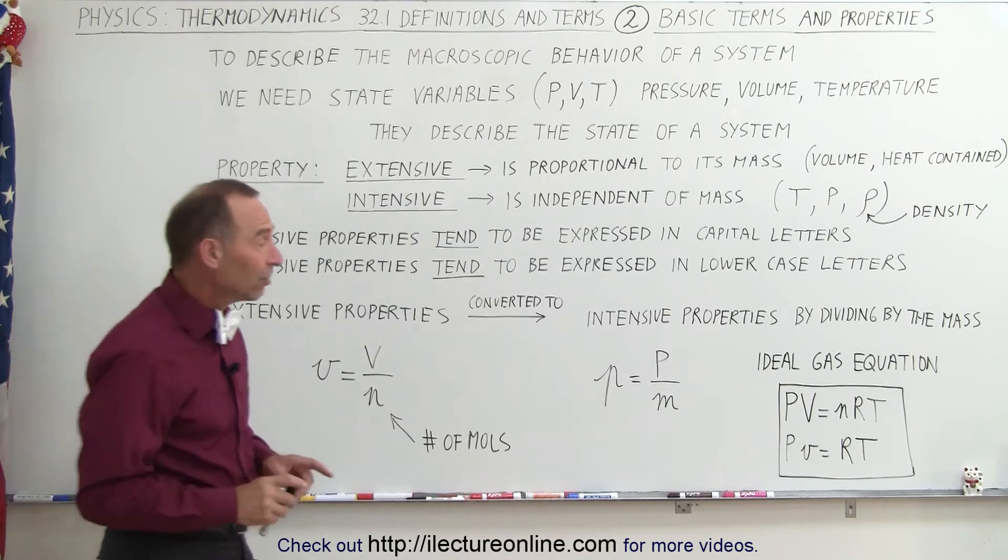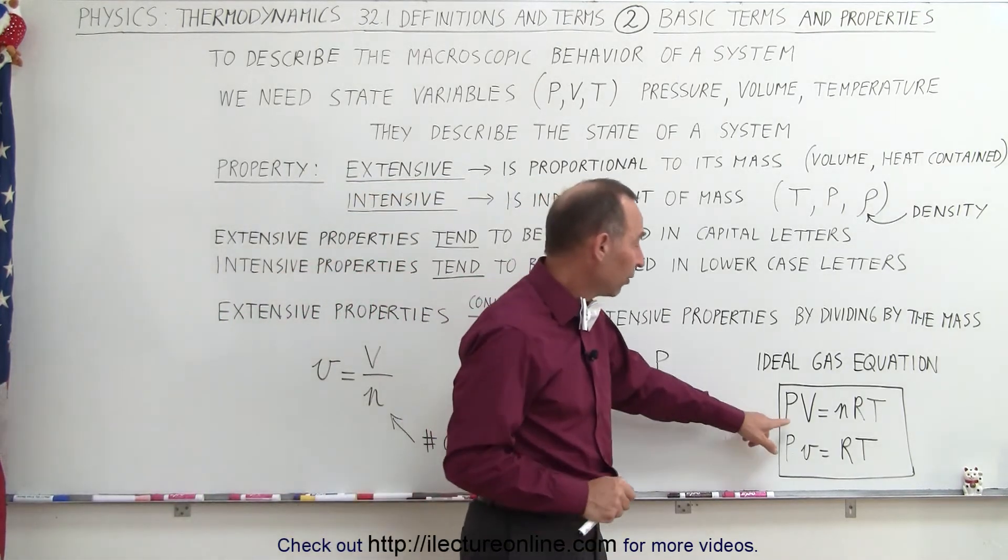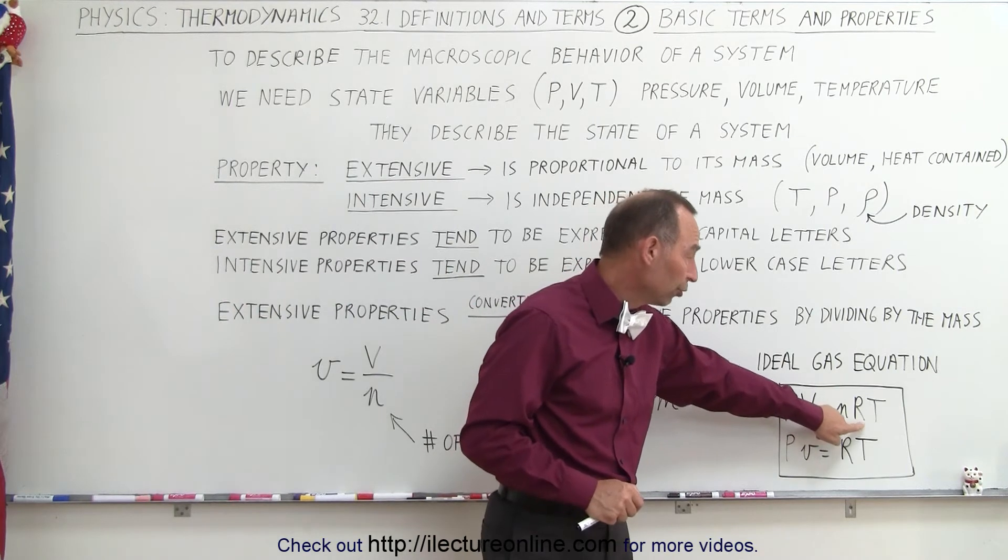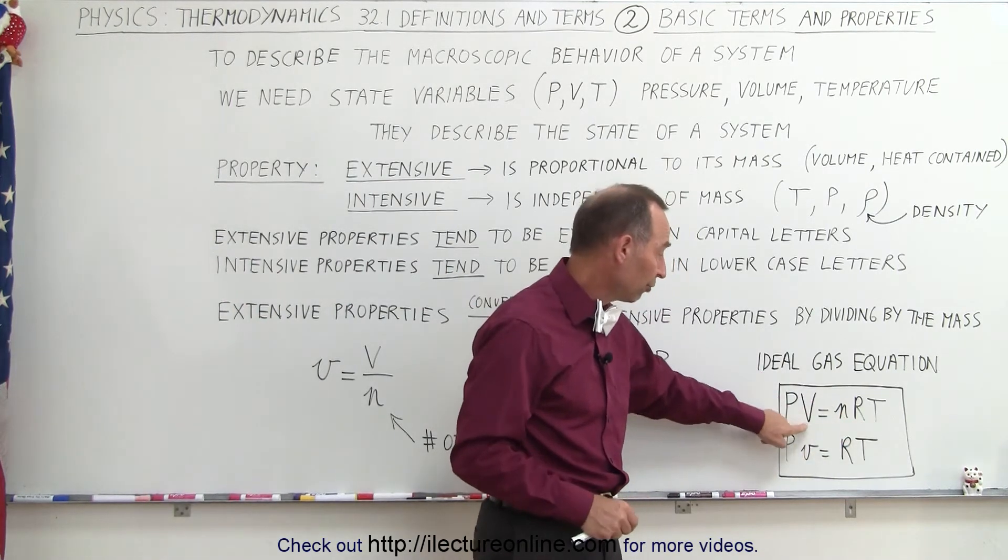Now when it comes to the ideal gas equation, notice we typically write it as PV = nRT. Of course, n is the number of moles, R is the gas constant, and we have pressure, volume, and temperature. Notice that they're now all written in capital letters.